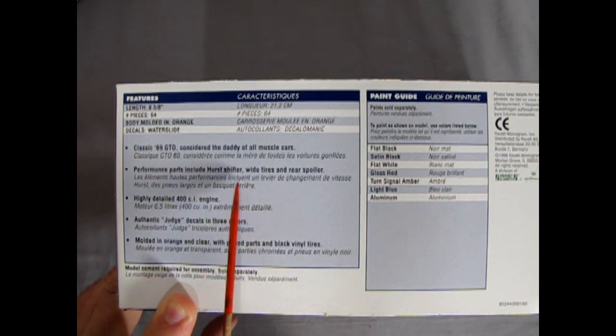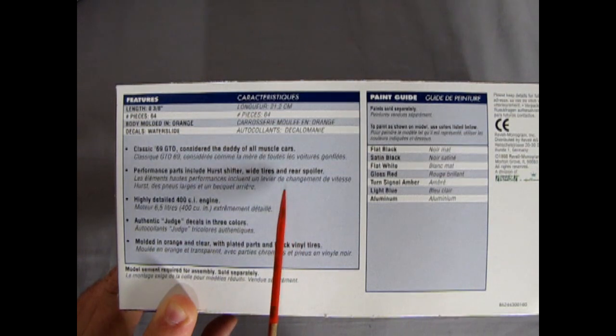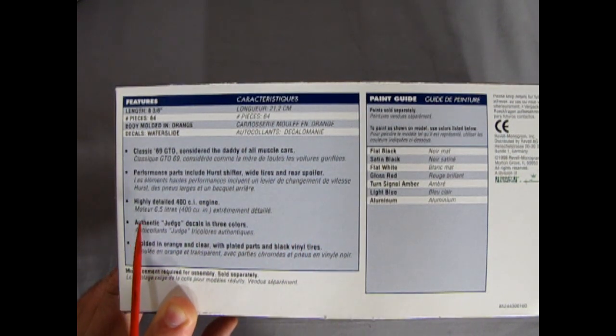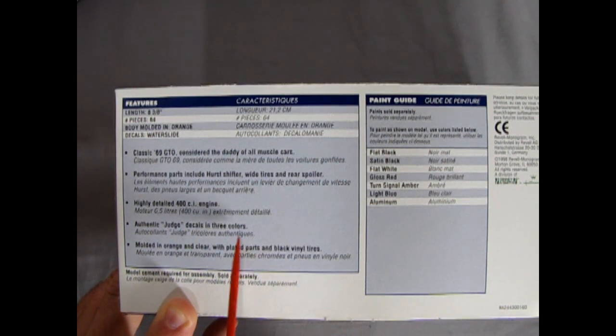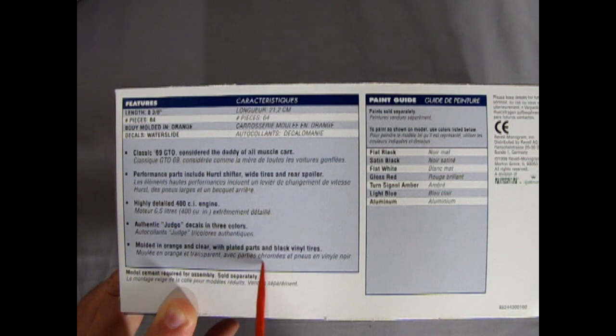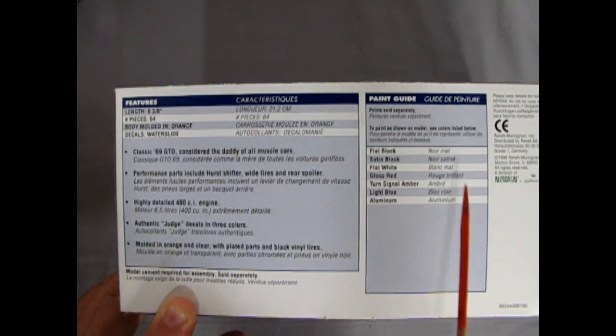Performance parts include a Hurst shifter, wide tires and rear spoiler. Highly detailed 400 cubic inch engine. Authentic Judge decals in three colors, which I'm missing. Molded in orange and clear with plated parts and black vinyl tires. And then here's our colors that it calls for.